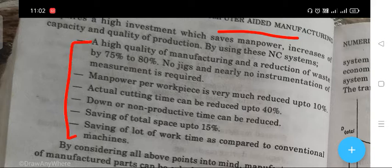Let's move on to the points: high quality of manufacturing with reduction of waste by 75% to 80%, no jigs and nearly no instrumentation measurement required, manpower per workpiece reduced up to 10%, actual cutting time reduced up to 40%, down or non-productive time reduced, saving of total space up to 15%, and saving of lot work time compared to conventional machines.